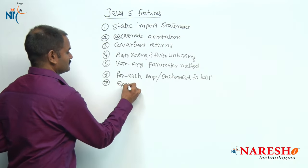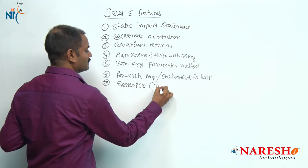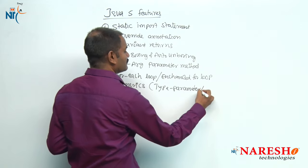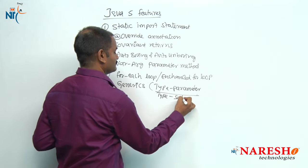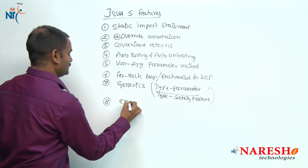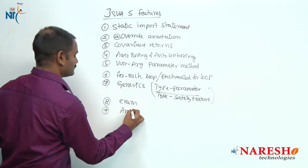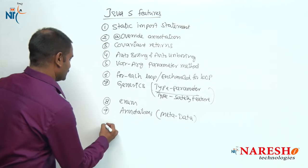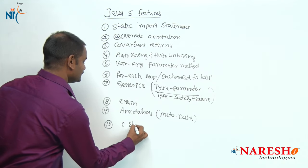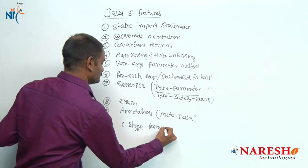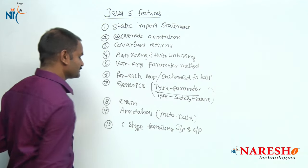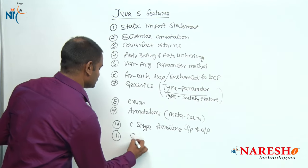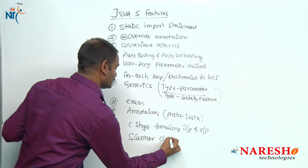The seventh feature is generics, also called type parameter or type safety feature. The eighth feature is enum. The ninth feature is annotations, also called metadata. The tenth feature is C-style formatting input and output — displaying data in C-style format. The eleventh feature is the Scanner class, which is an API level addition.